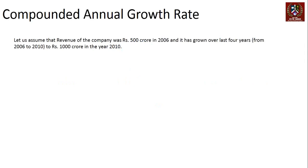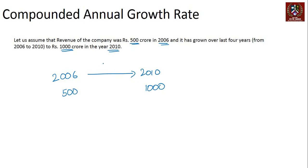Let's assume that the revenue of a company was 500 crore rupees in 2006 and it grew to about 1000 crore in 2010. So the data given is: in 2006 this number was 500, and in 2010 this number has grown to 1000. That's a period of four years over which the growth has happened — a total growth rate of 100%.